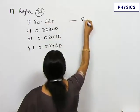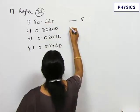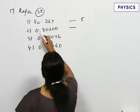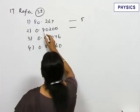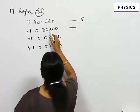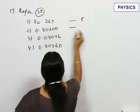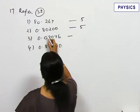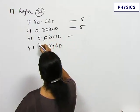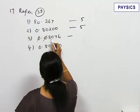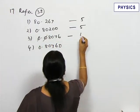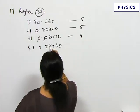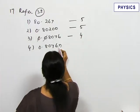In the second number: 1, 2, 3, 4, 5 — also 5 significant figures. In the third number, this zero is non-significant, so: 1, 2, 3, 4 — only 4 significant figures. In the fourth number: 1, 2, 3, 4, 5 — again 5 significant figures.